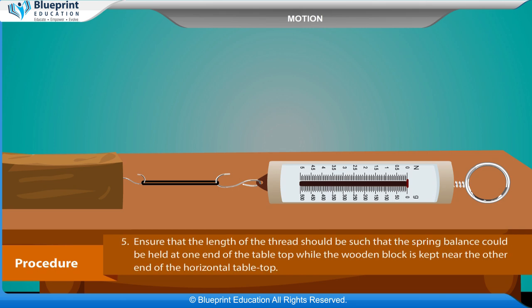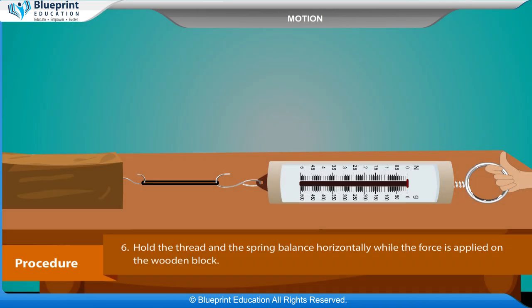Ensure that the length of the thread is such that the spring balance can be held at one end of the table top, while the wooden block is kept near the other end. Hold the thread and the spring balance horizontally while the force is applied on the wooden block.